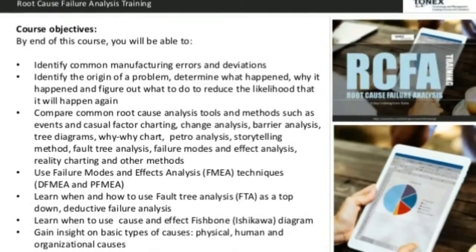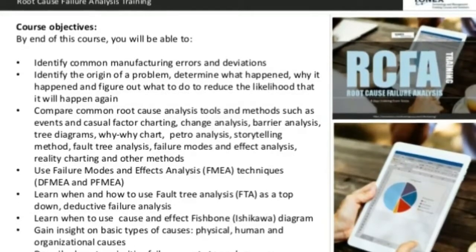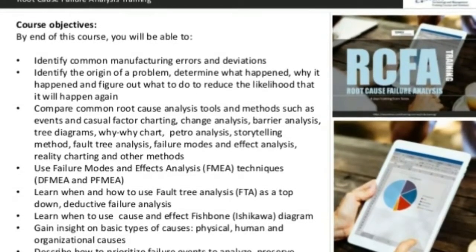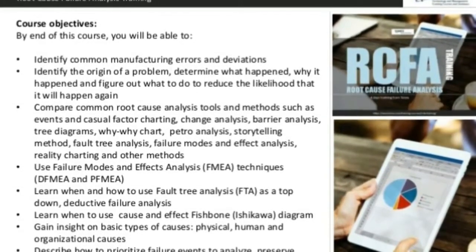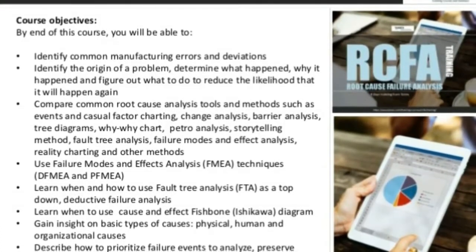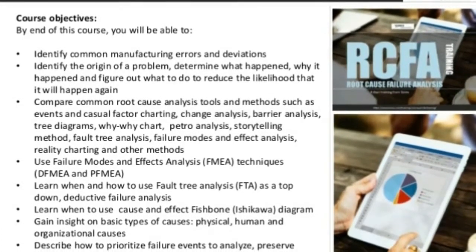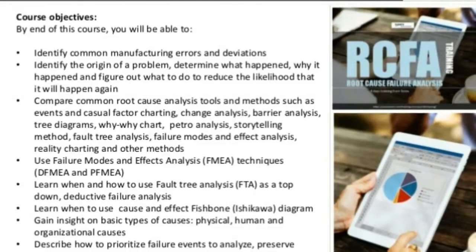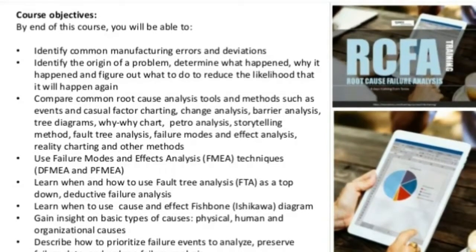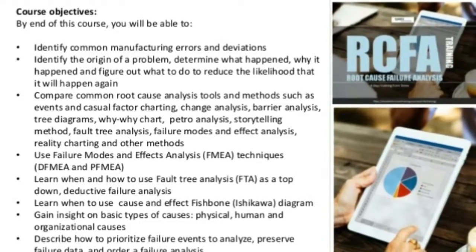Course objectives: by the end of this course you will be able to identify common manufacturing errors and deviations, identify the origin of a problem, determine what happened, why it happened, and figure out what to do to reduce the likelihood that it will happen again.